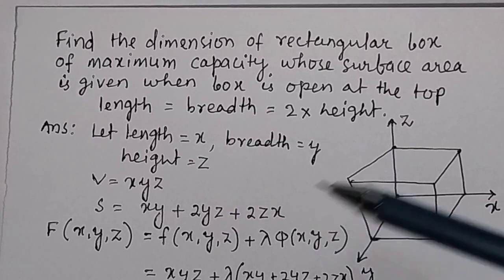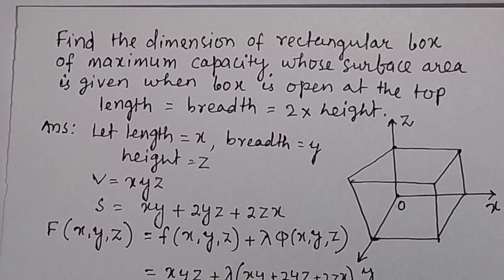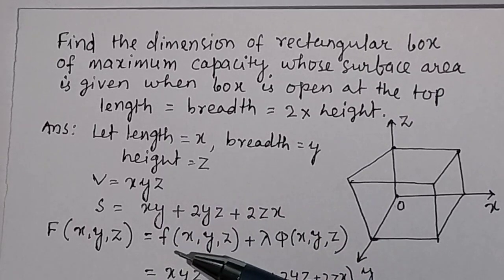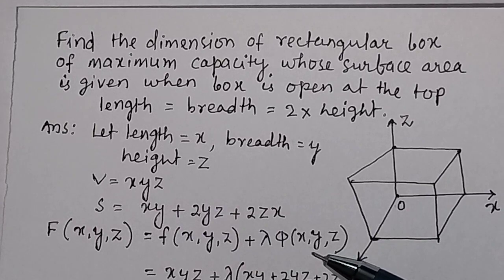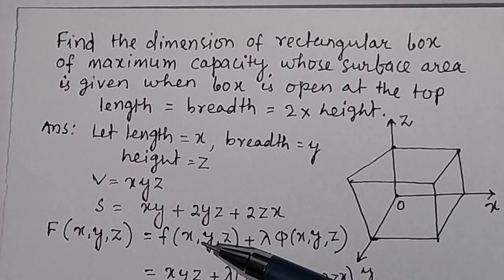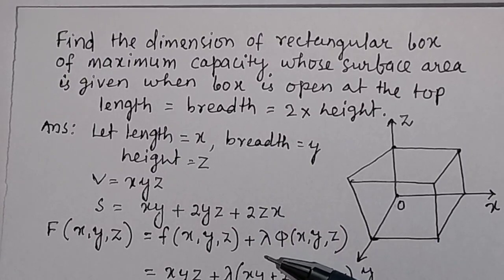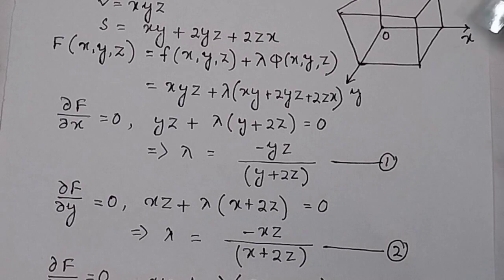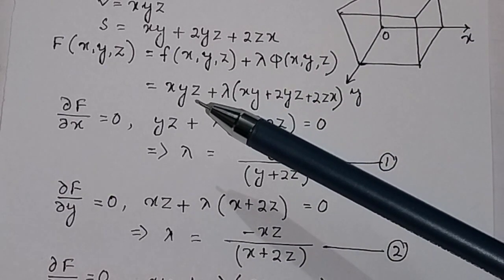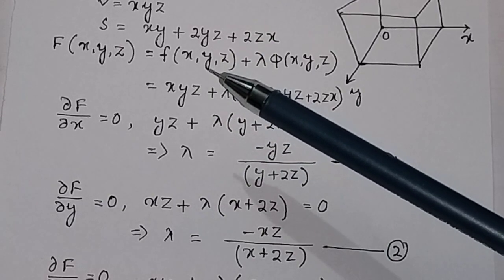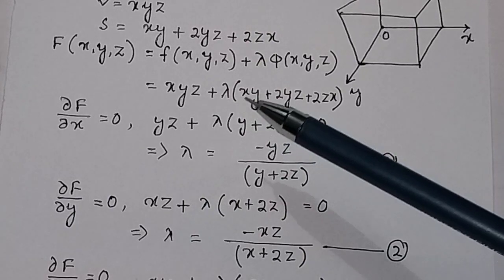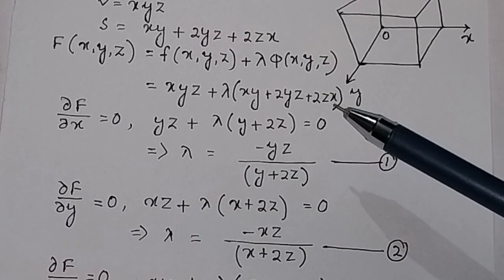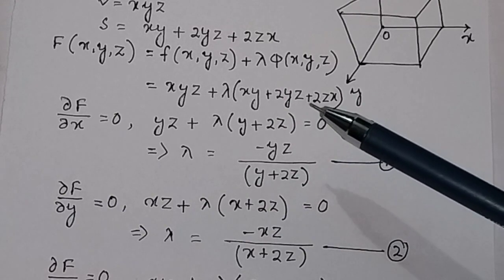We have to prove this using constraint optimization with the Lagrange multiplier method. Any function can be represented as F(x,y,z) plus lambda into phi(x,y,z), where F(x,y,z) is the objective function, lambda is the Lagrange multiplier, and phi(x,y,z) is the constraint. Here the objective function is the volume xyz plus lambda, and the constraint is the surface area of the rectangular box: xy plus 2yz plus 2zx.